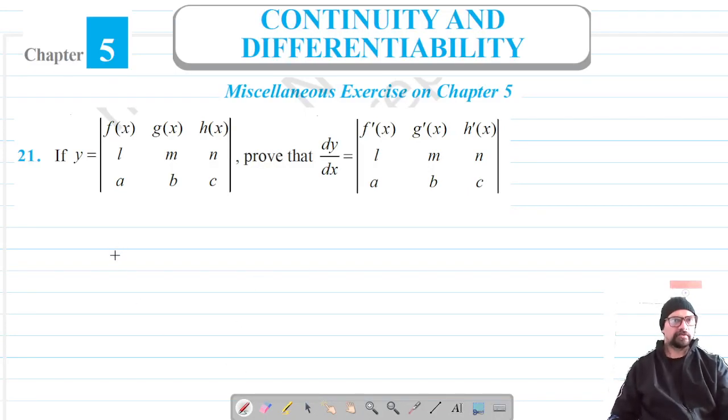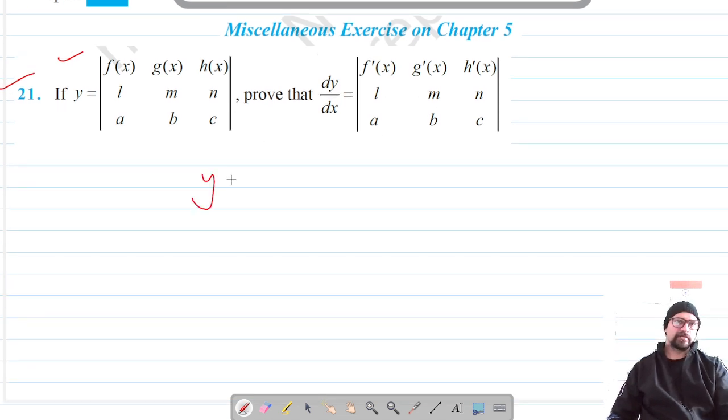Welcome to Prism Science Academy classes. We are on question number 21 of miscellaneous exercises on chapter five, where we are given a function in the form of a determinant and we have to find its differentiation to show that it's f'(x) g'(x) h'(x) on element a b c.